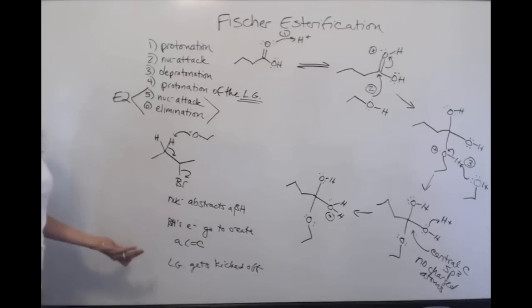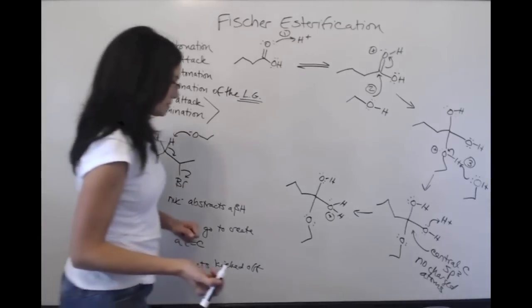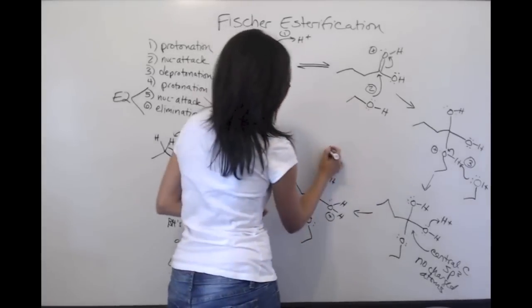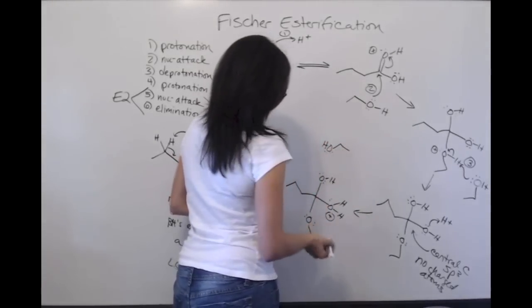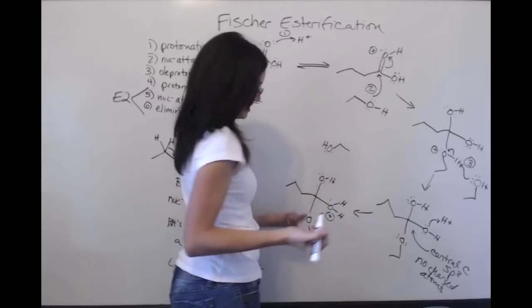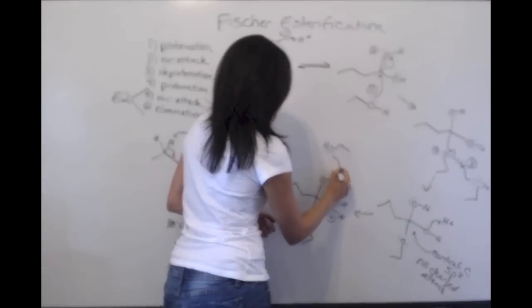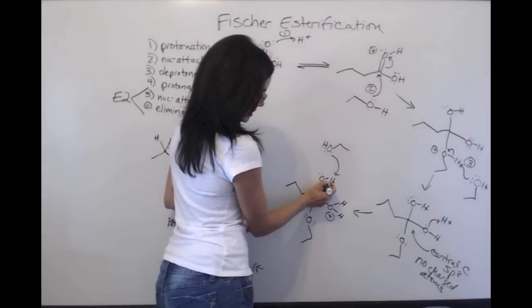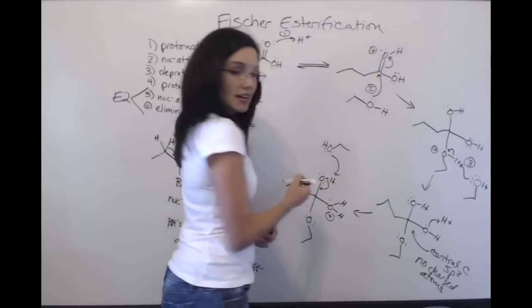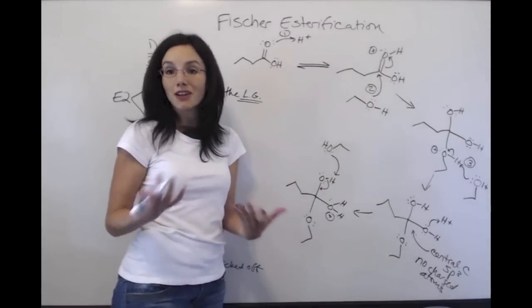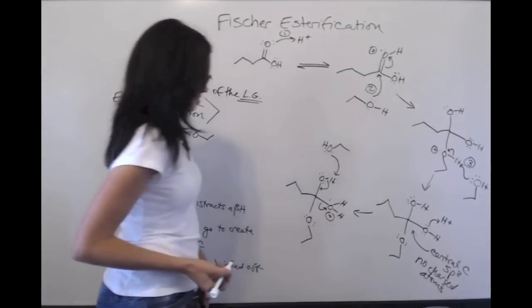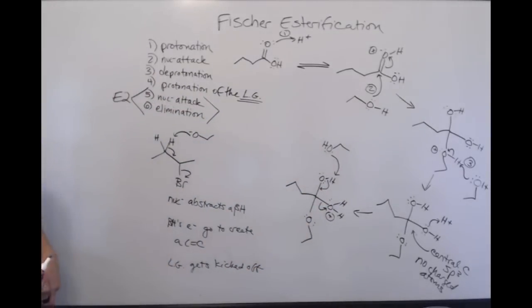The exact same thing, almost, is going to happen here. Our nucleophile, which in this case is our alcohol, ethanol, is going to come and take a beta proton. This is sort of beta. The electrons that bonded this proton are going to go and form a double bond. In this case, it's not a carbon-carbon double bond. It's a carbonyl double bond. And as a result, our leaving group is going to get kicked off. Can you see the parallel?